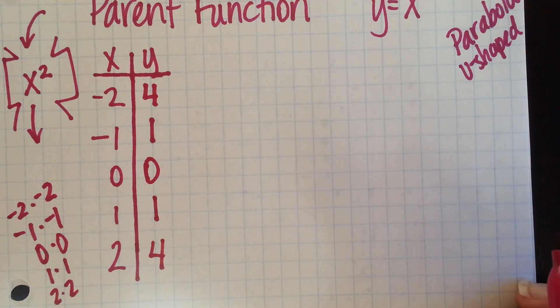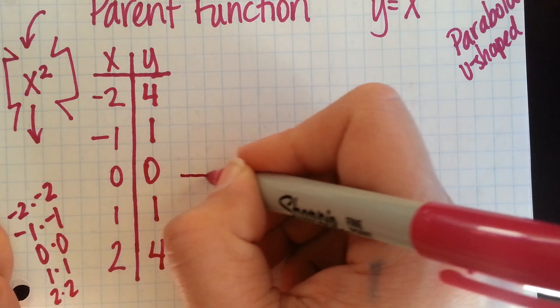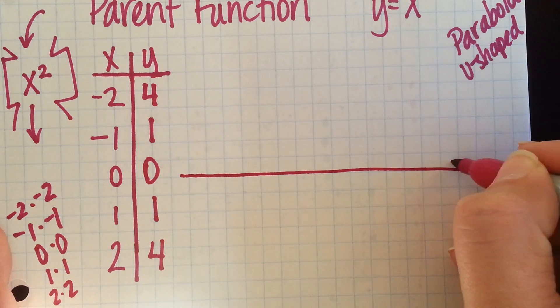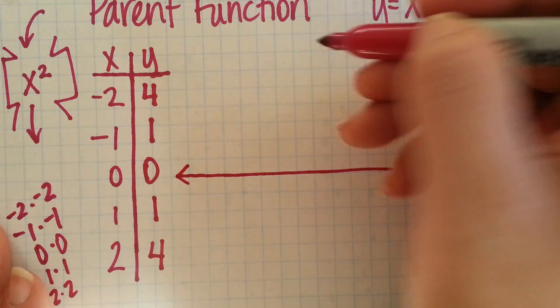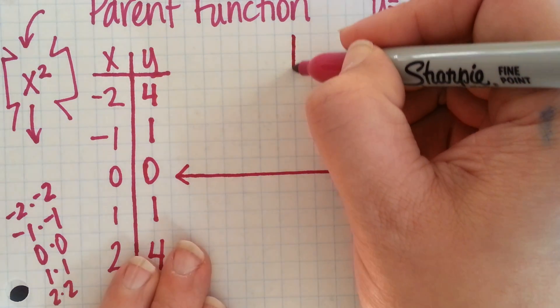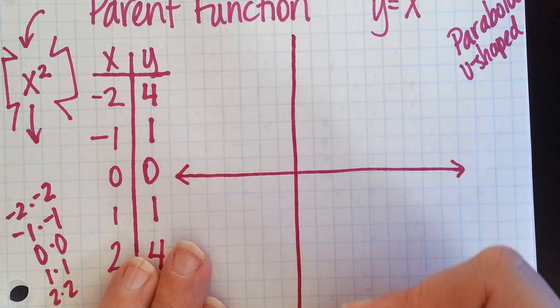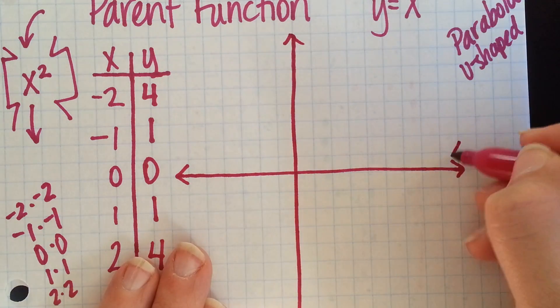Now, let's start with these 5 points and see if we can graph our quadratic parent function. So, first thing we need is a graph. So, we'll go ahead and sketch ourselves an x and y axis.